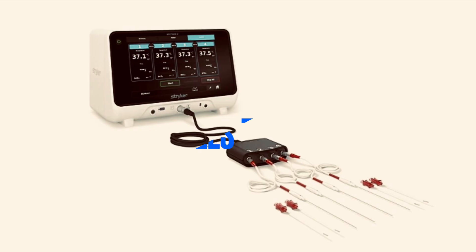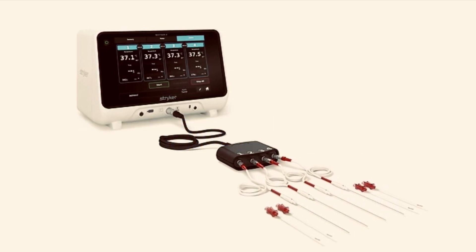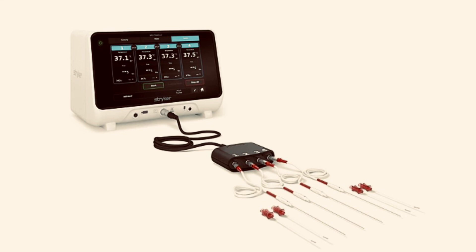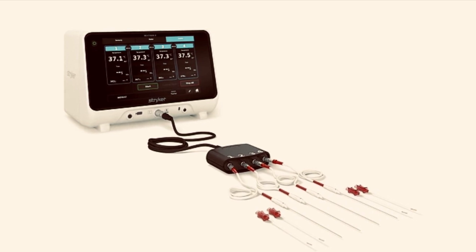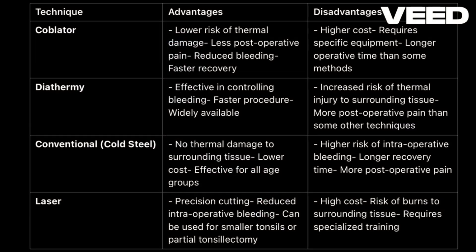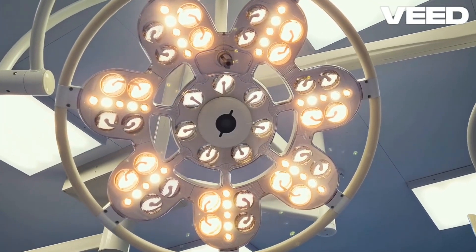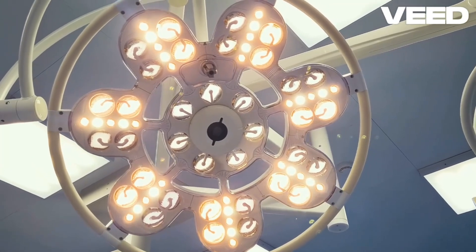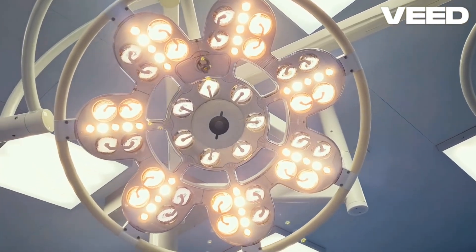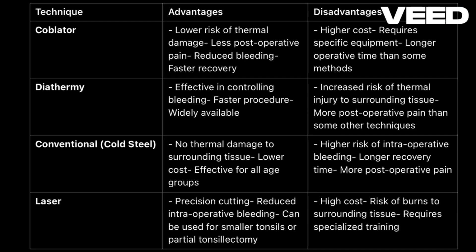Radiofrequency tonsillectomy works similarly to coblation but at higher temperatures, using radiofrequency energy to ablate tonsil tissue. This method provides effective hemostasis, and it's versatile enough for both full and partial tonsillectomies. However, the higher temperature may lead to more thermal injury, increasing postoperative pain. Some studies suggest that radiofrequency tonsillectomy has a slightly higher risk of secondary bleeding compared to cold techniques.